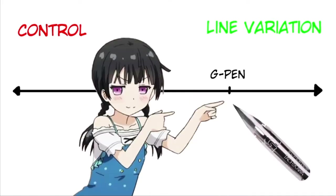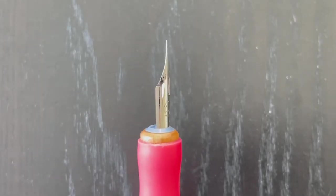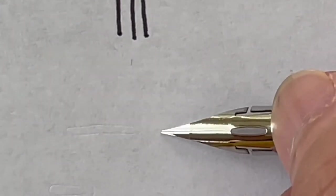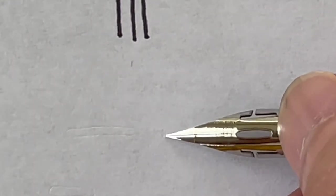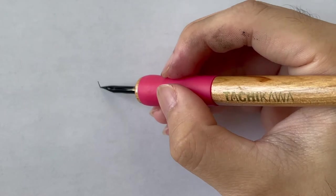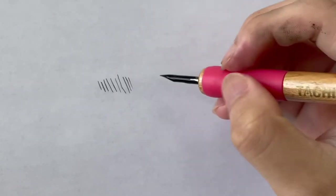Nib pens provide a happy medium between control and line variation as the versatile tool of choice for most mangaka, as the opening of the G pen gets wider with increased pressure to distribute ink at a larger width. Maru pens also can change line width, but is really made for finer details and thinner lines.